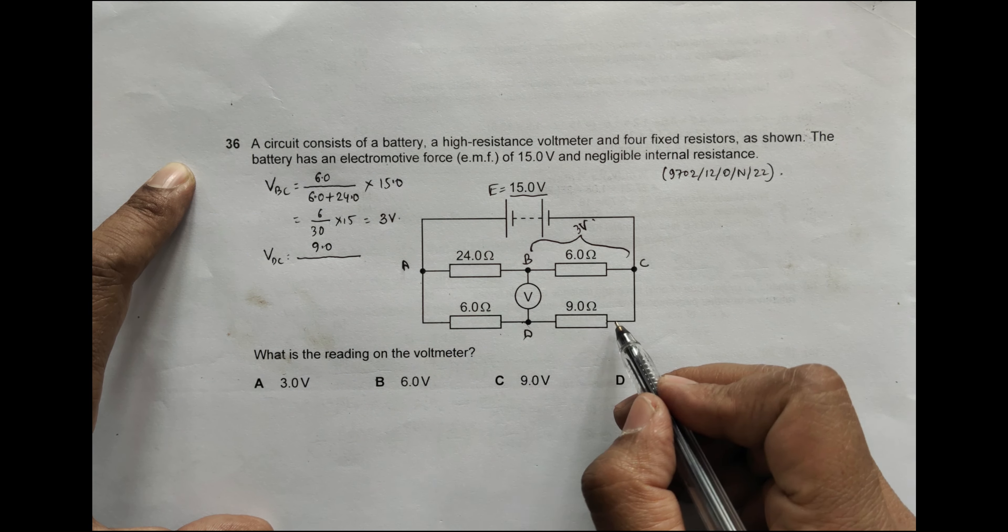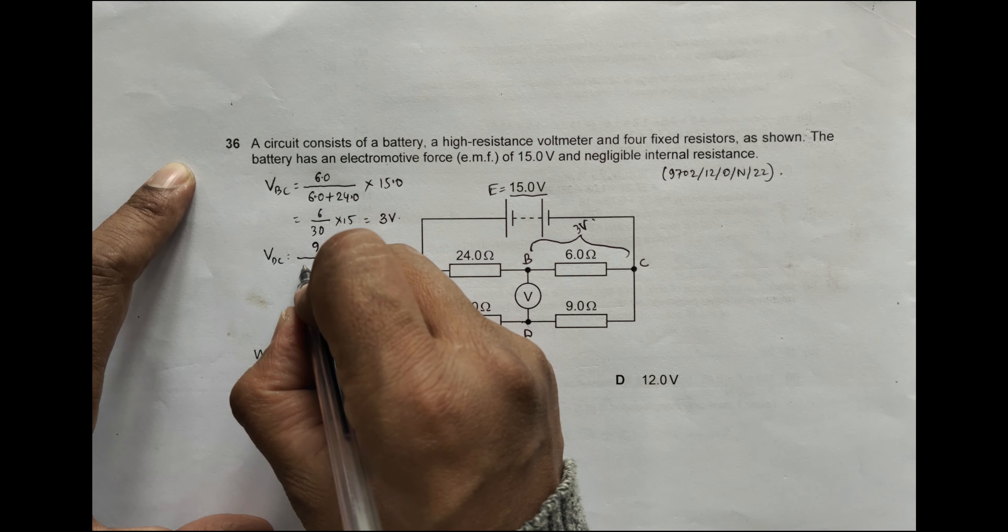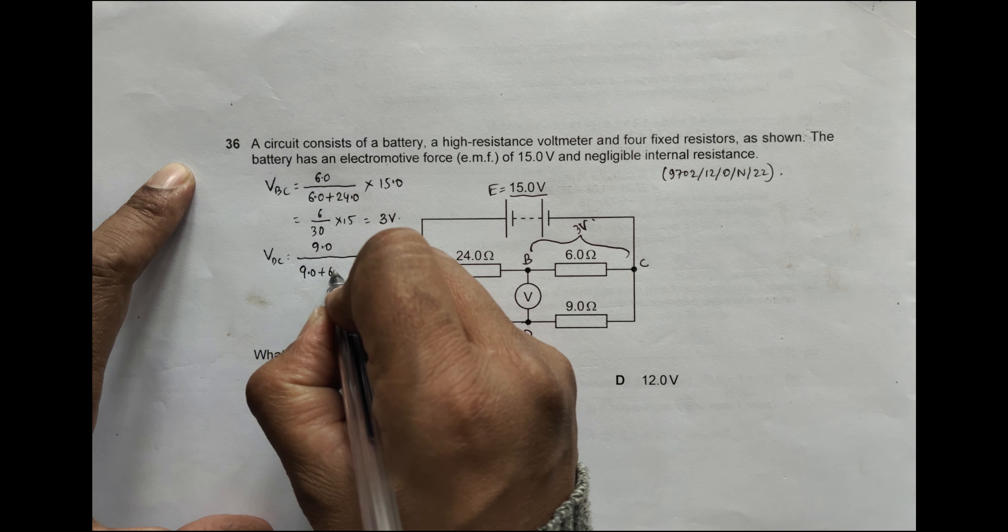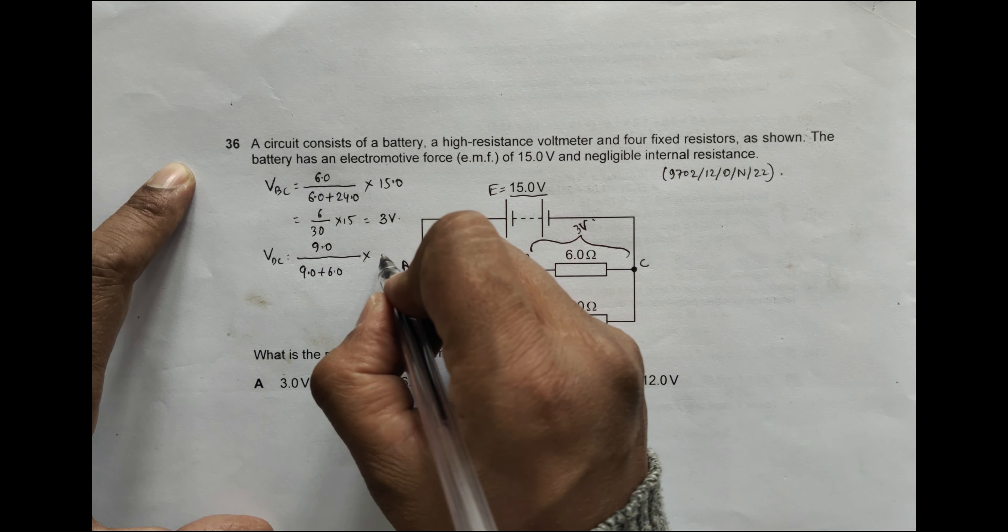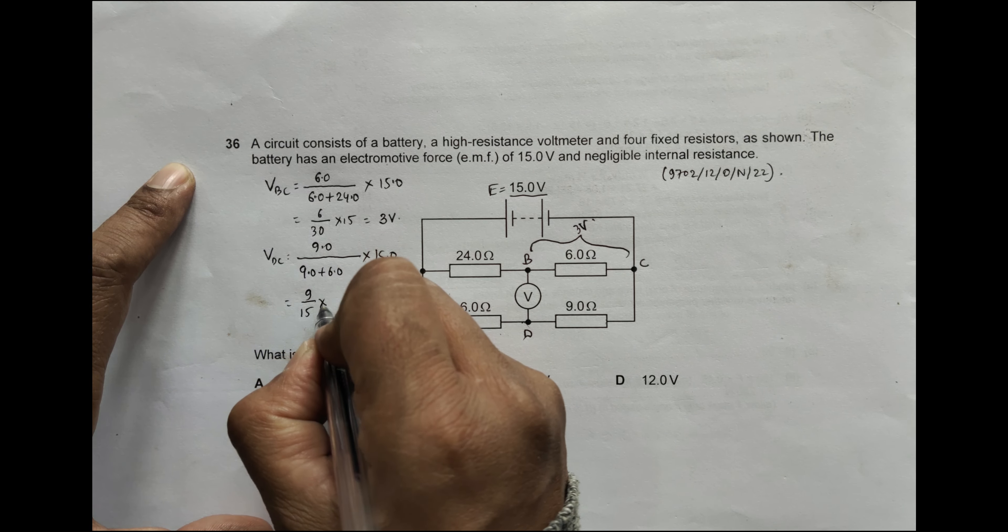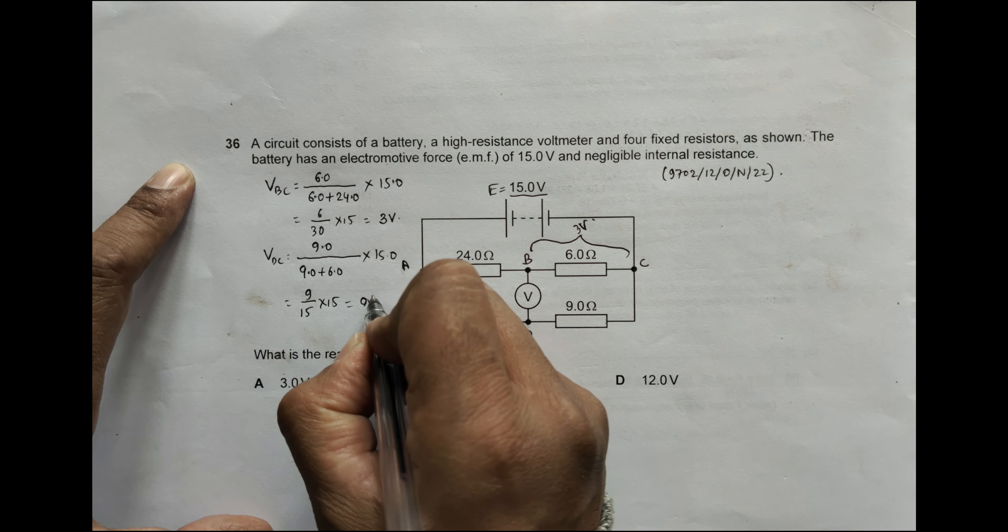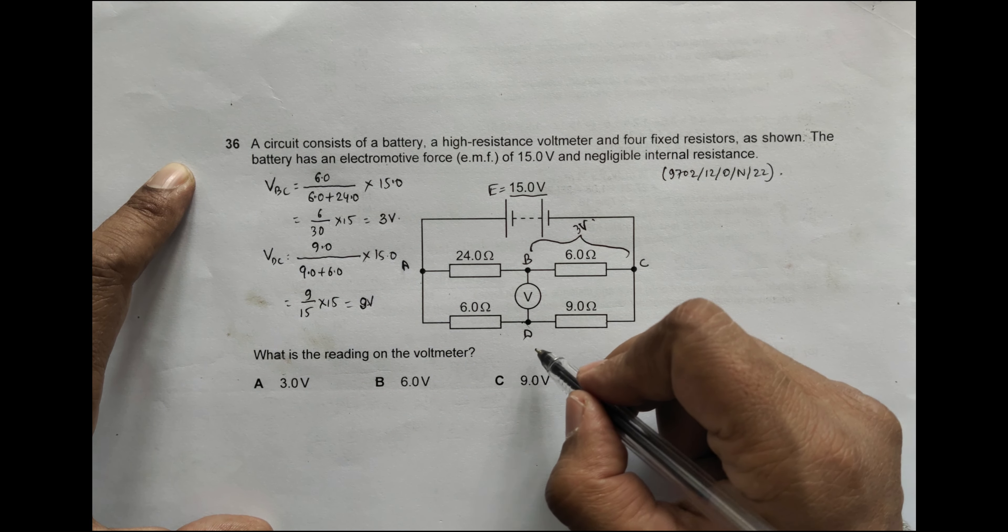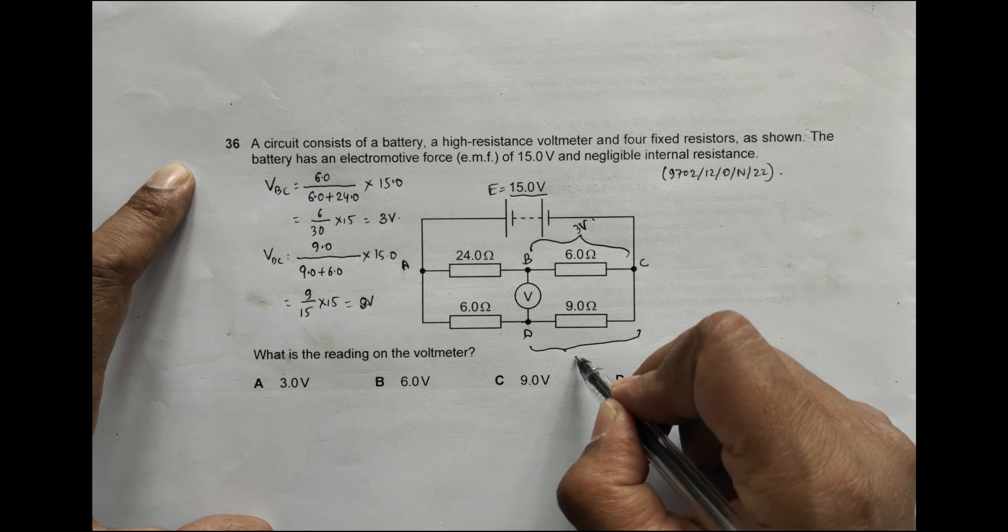Equal to 9 by 15 into 15, equal to 9 volts. So this voltage from here to here is 9 volts.